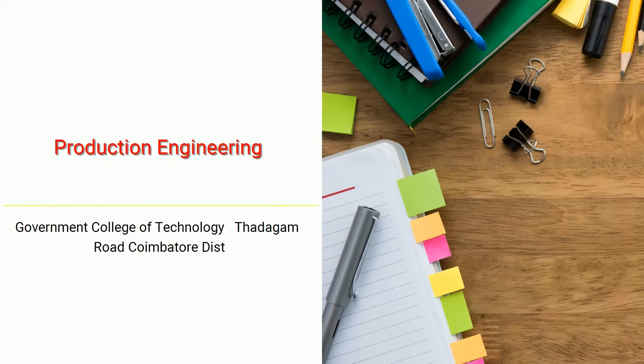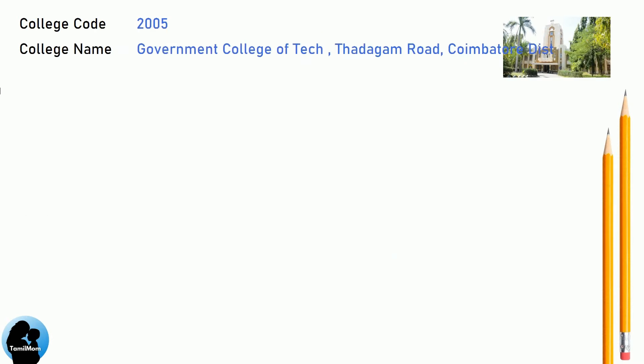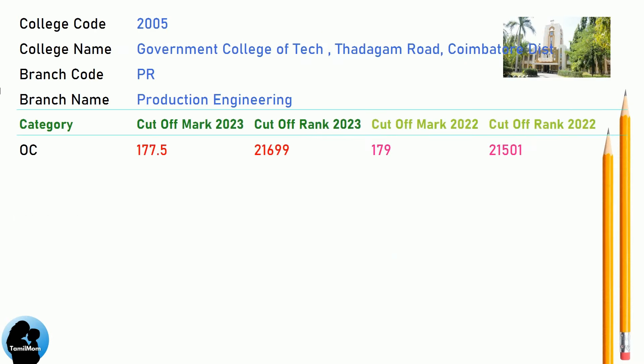Government College of Technology, Thadagam Road, Coimbatore District — cut-offs for Production Engineering.